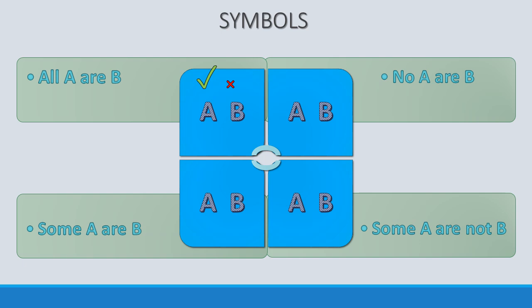The second type, 'No A are B', means no element from the complete set of A belongs to the complete set of B. It also means the vice versa — 'No B are A' is also true. So the symbol for this type will be a tick over both A and B, as we have information about both complete sets, and we put a colon in between as it is a negative sentence.